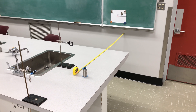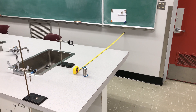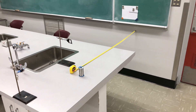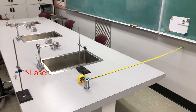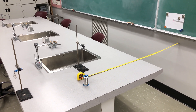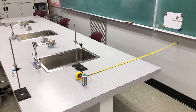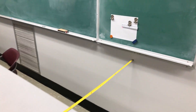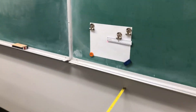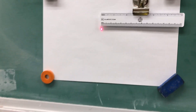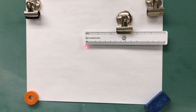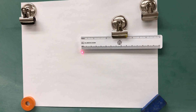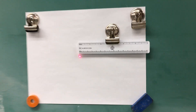Hi everyone, welcome back to the lab. Today we've got the setup for Young's double slit experiment. On the left here we've got a laser shining a red beam of light across the room towards the white sheet of paper on the chalkboard, and this white sheet of paper is going to be our viewing screen. You can see the red dot that we would expect from a laser, and we could use that ruler for some calculations later on.